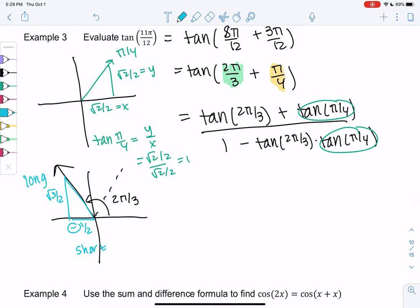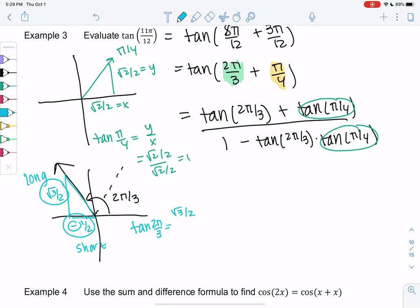Tangent will be y over x again. So tangent of 2π over 3 will be y over x, root 3 over 2 over negative 1 half. 2's cancel out and we just get negative root 3.